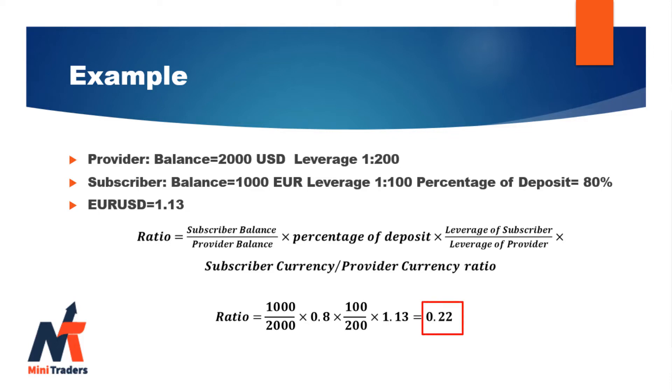Using the formula, we get 0.22 as our ratio. This means that if the provider opens a position of 1 lot in his account, you would have the same position at 0.22 lots in your account. Two important points: the minimum lot size in the subscriber account cannot be lower than the broker's minimum lot size — most of the time not less than 0.01 lot. You should be careful about this, especially if you have a very small account, as it can be dangerous.